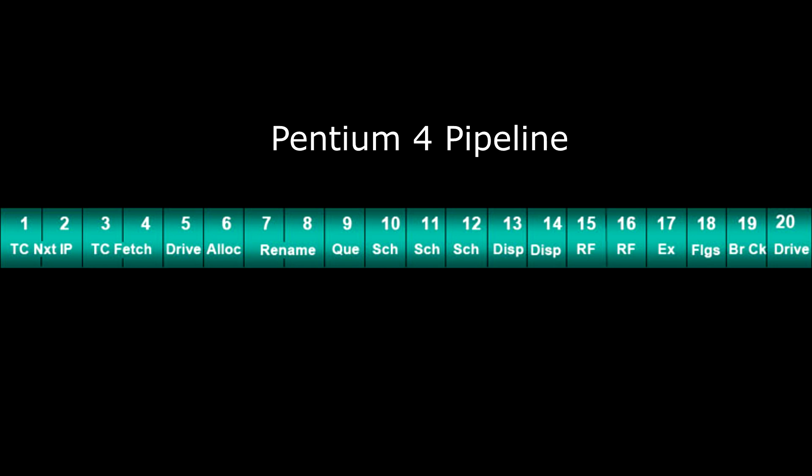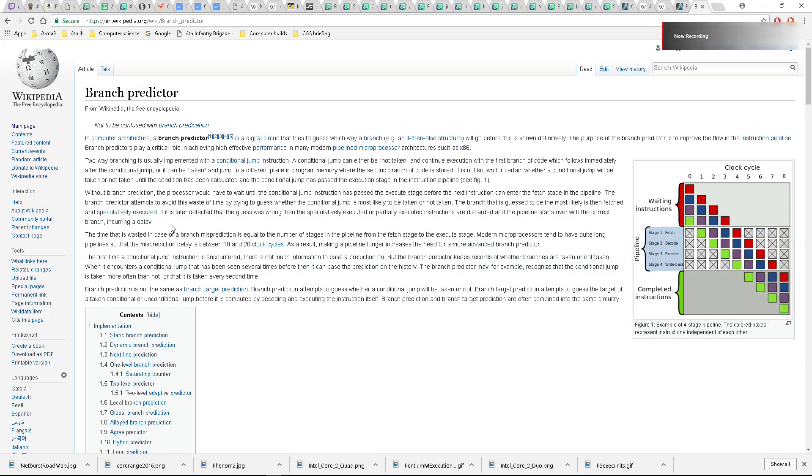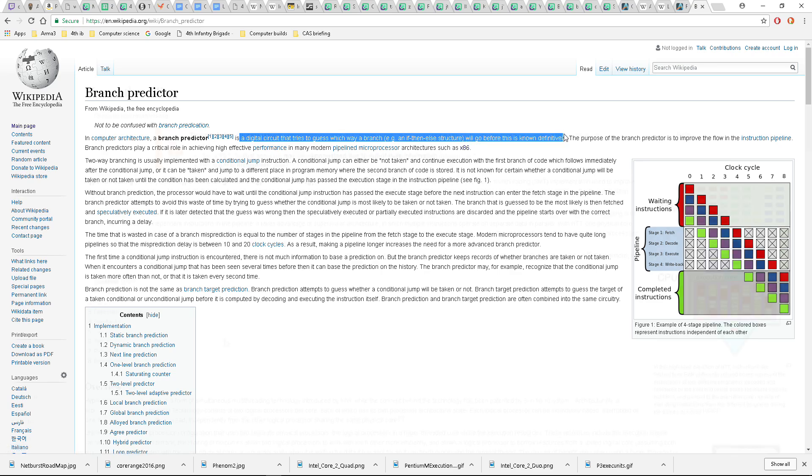The netburst architecture brought about really the only other modern technologies that make a modern CPU today, such as good branch prediction. I don't remember off the top of my head if the P6 architecture had branch prediction, but either way, if it did, it wasn't all that advanced, and the major gains were made here with the netburst architecture.